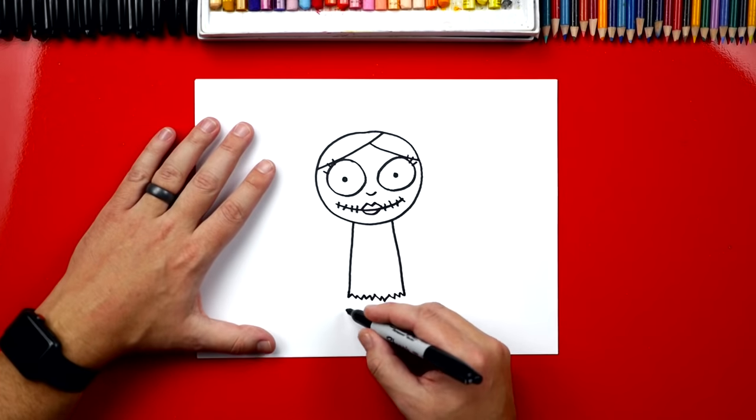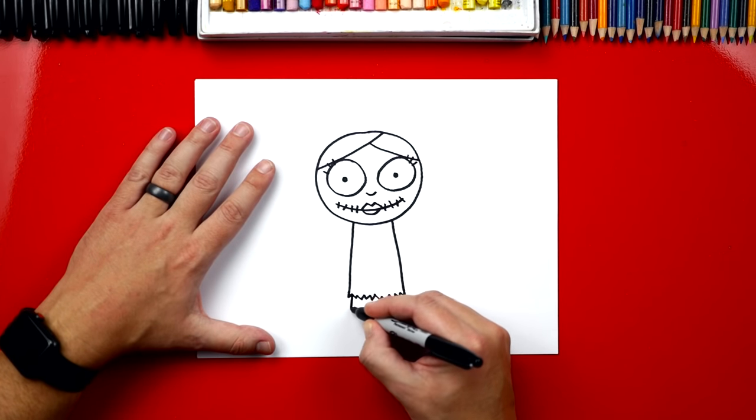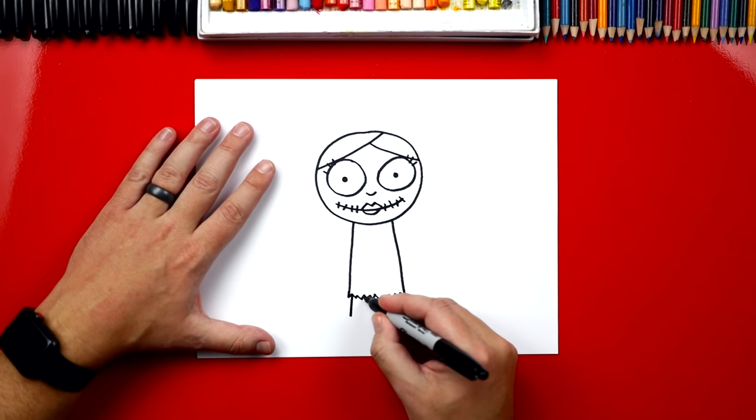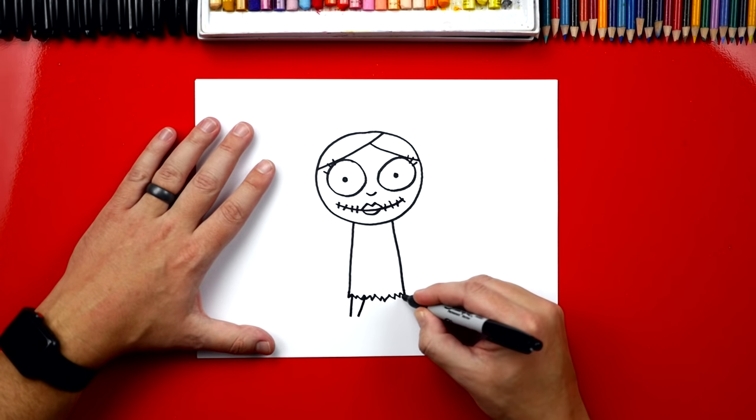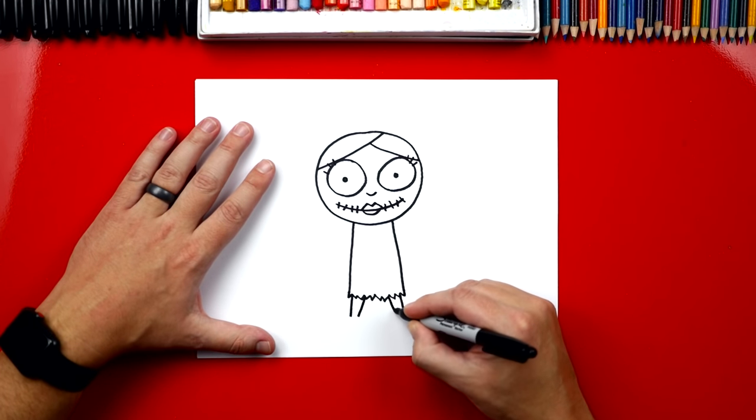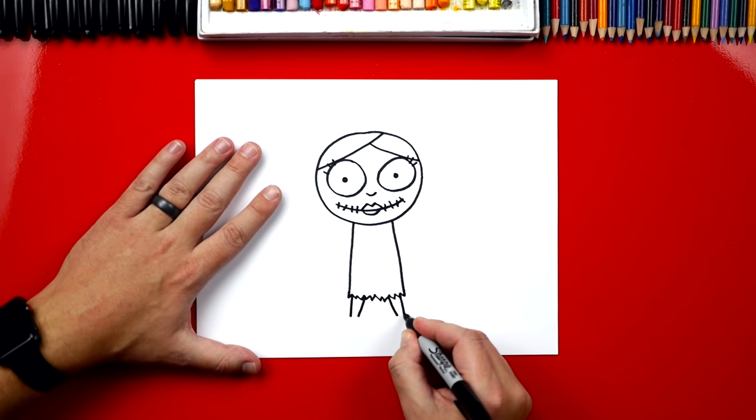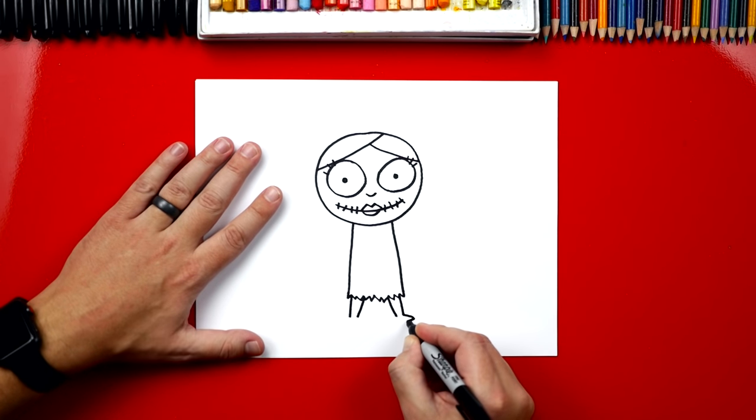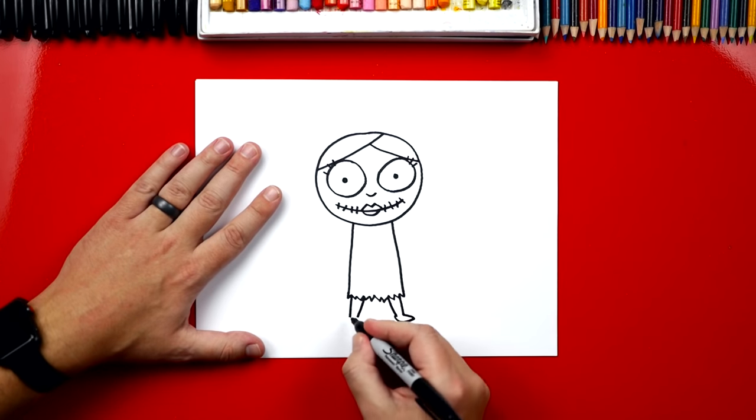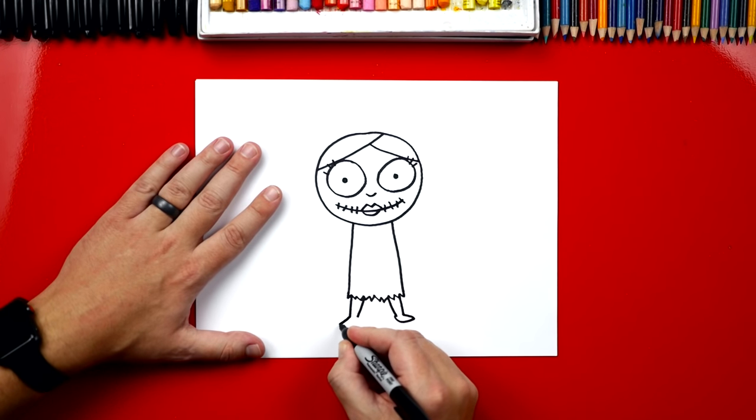Now let's draw her legs sticking out the bottom of her dress. We're gonna draw two lines for the left leg and two lines for the right leg. Then at the very bottom we're gonna connect these two with a sideways V for small little feet, and also one on the other side.